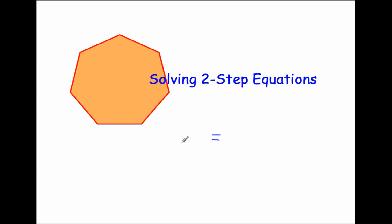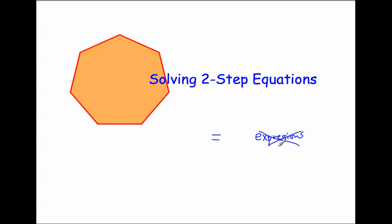It's a statement of two expressions being written with an equal sign. An expression, however, is a statement of variables, constants, and coefficients that do not have an equal sign. So the equation has an equal sign. Expressions do not. No equal sign is present.